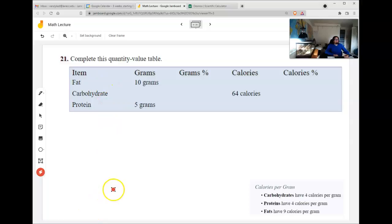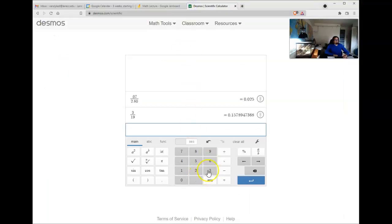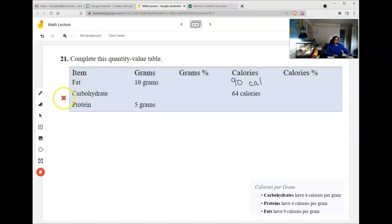Let's do one that's not all worked out for us already. This is what it will actually look like on the practice finals and the finals. So for fat, that's 9 calories per gram. So I'm going to have to do a times 9. 10 times 9 is 90. For carbohydrates, I'm going the other direction. So instead of multiply, I'll divide. 64 divided by 4.